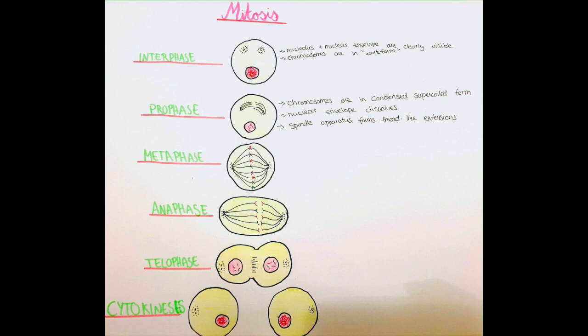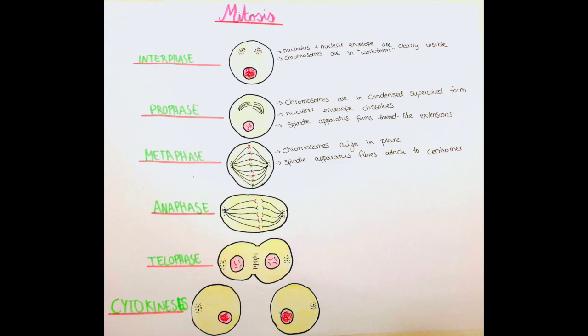The next phase is the metaphase and it's not only in the middle of the process but also here the chromosomes align in the metaphase plane so they all align next to each other in this plane. And now the spindle apparatus has a very important role because the fibers which we saw developing already in the prior phase, the prophase, now attach to the centromeres of the chromosomes.